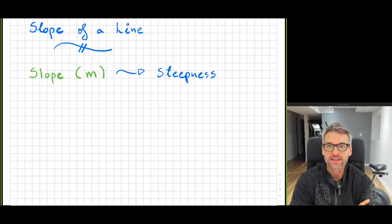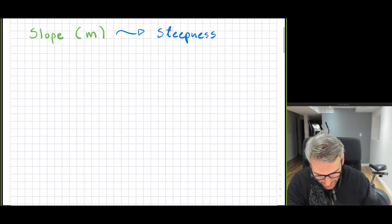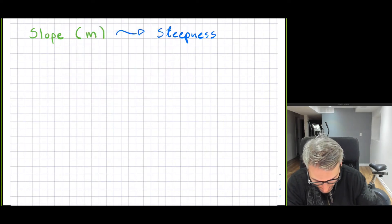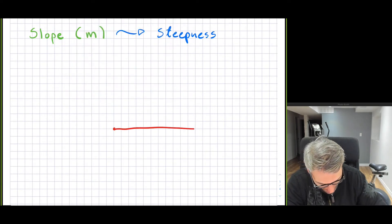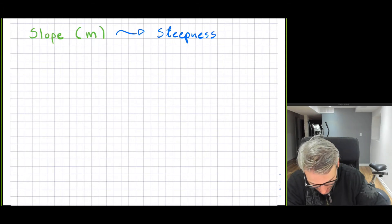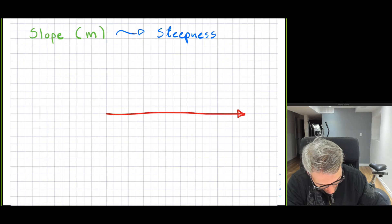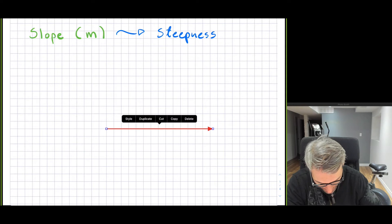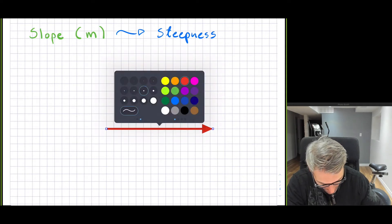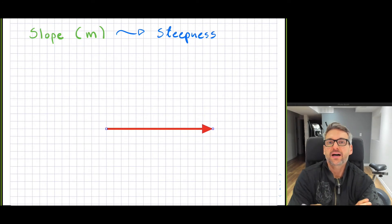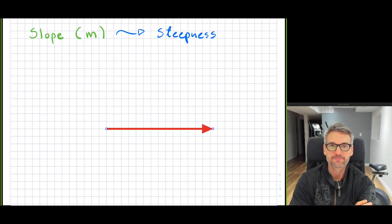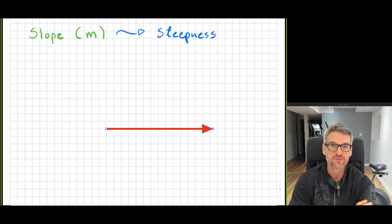So how steep is a line? What do we mean by the steepness of a line? If you take a line — I'm going to draw a line right here — this line is heading towards the right-hand side. Now if you take this line, you can increase its steepness. At the moment it's flat, it's horizontal, which means it is basically flat.